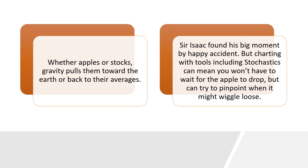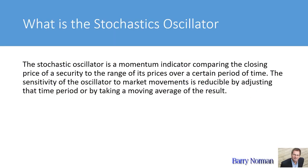Whether we're talking about apples or stocks, gravity pulls them back towards earth or back towards their averages. Sir Isaac found his big moment by a happy accident, but charting with tools including stochastic can mean you won't have to wait for the apple to drop — you can try to pinpoint when it might wiggle loose. The stochastic oscillator is a momentum indicator comparing the closing price of a security to the range of its price over a certain period of time.